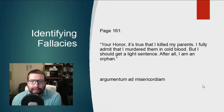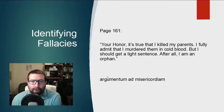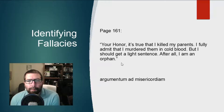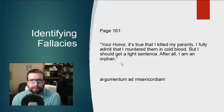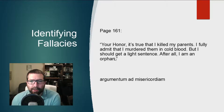In that case, this is an argumentum ad misericordiam — an appeal to compassion, an argument to pity. It's possible that being an orphan should mean a lighter sentence, but we would need some connection to show why it's relevant. In this case, being an orphan is completely irrelevant because the reason he's an orphan is due to the crime itself that he committed. So his being an orphan is not relevant to the sentence he should receive.